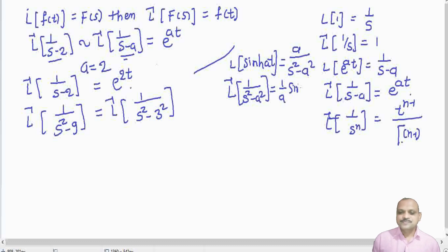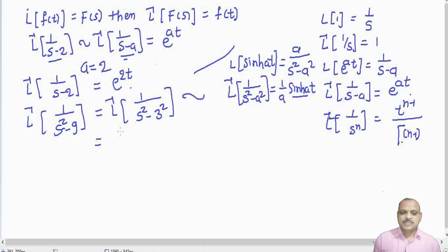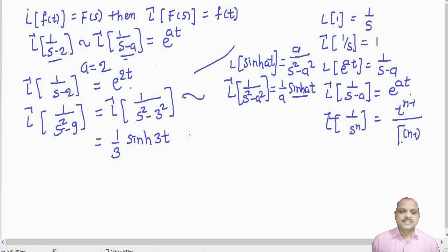Comparing with our expression, we see that a = 3, so L⁻¹{1/(s²−9)} = (1/3) sinh(3t). This is how we find inverse Laplace transforms using standard formulas.